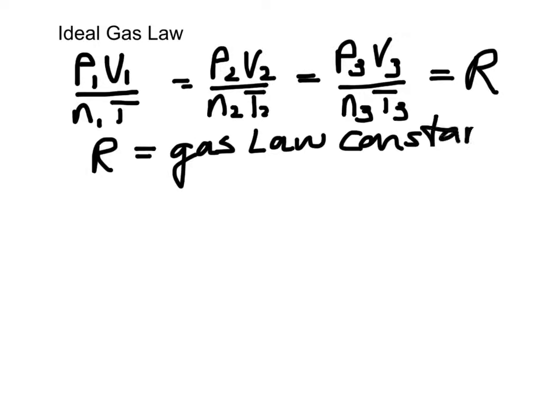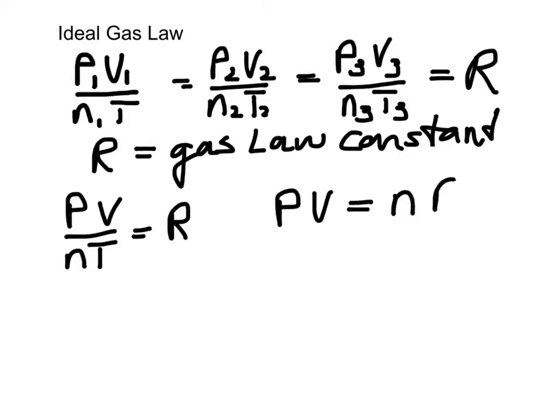So we can write in very generic terms that P times V over N times T equals R, or as it's better known, PV equals NRT.